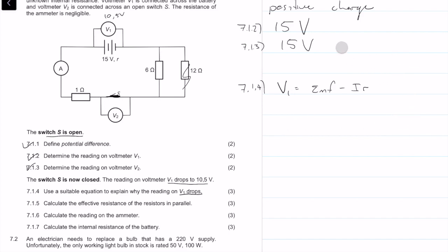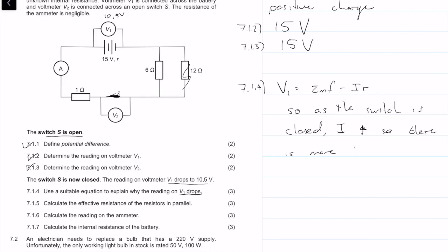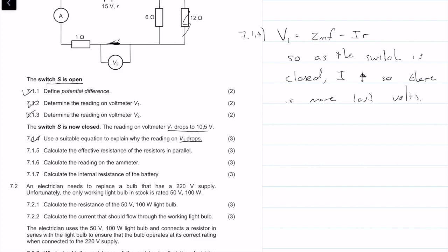To write the explanation: as the switch is closed, I increases, so there is more lost volts. We get three marks for that.